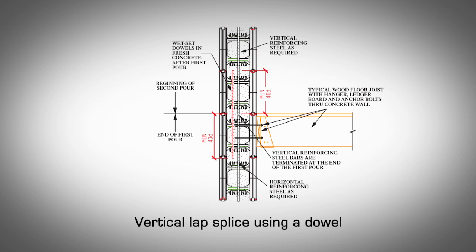The wet-set vertical splice reinforcing steel bars should also protrude into the upper wall by the same splice length specified by the design engineer or 40D as a minimum. Please refer to figure 6.6.